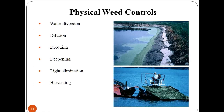Physical or mechanical control consists of methods that kill or suppress weeds through physical disturbance. Such methods include pulling, digging, disking, plowing and mowing. The success of various mechanical control methods is dependent upon the life cycle of the target weed species.